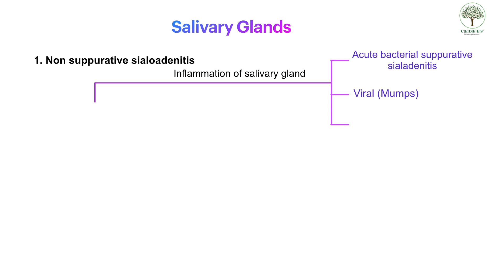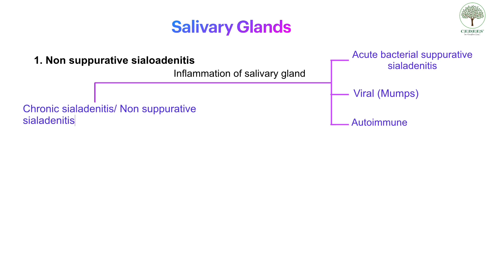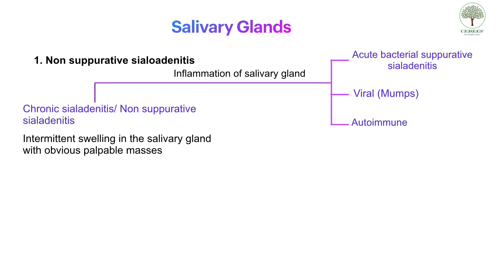Then we have viral mumps. Then we have autoimmune sialadenitis, which includes disorders like sarcoidosis. Then we come to chronic sialadenitis, or non-suppurative sialadenitis, which is characterized by intermittent swelling of the salivary gland with an obvious palpable mass without formation of any pus.